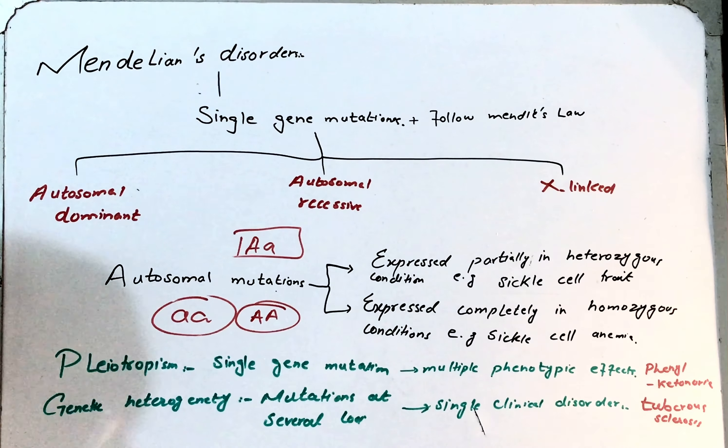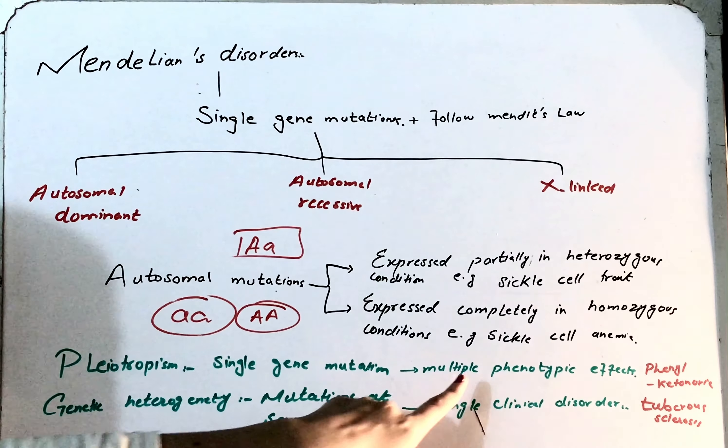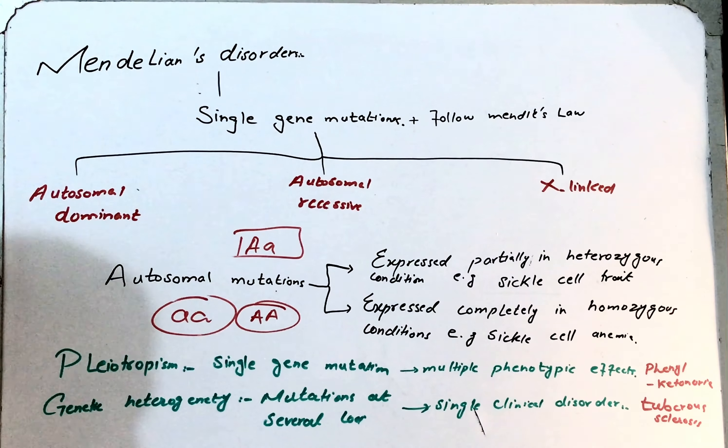And now we have to study these two terms: pleiotropism and genetic heterogeneity. Pleiotropism, or pleiotropy, is a phenomenon in which a single gene controls many phenotypic effects. So pleiotropism is when there is mutation on a single gene, but it can lead to multiple phenotypic effects.